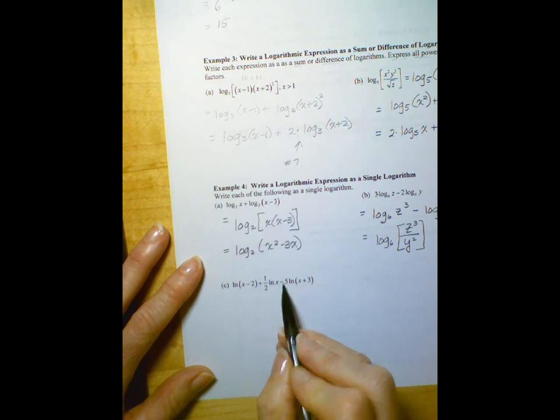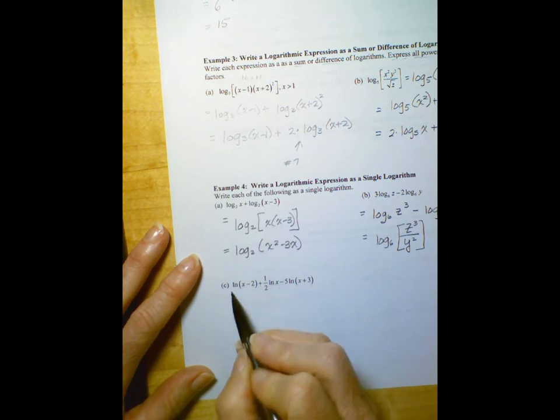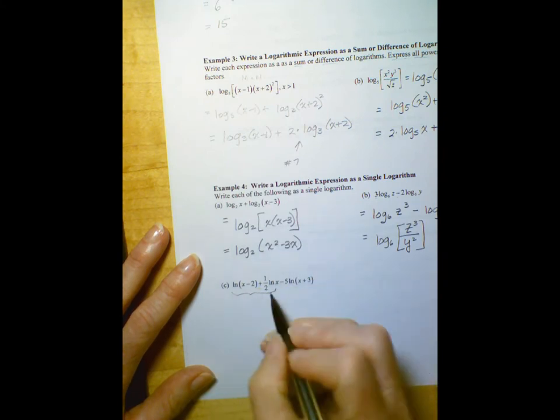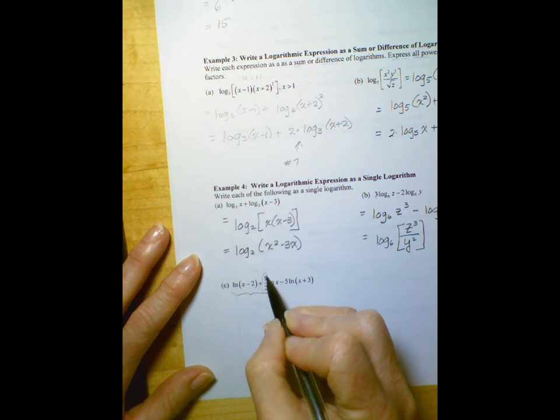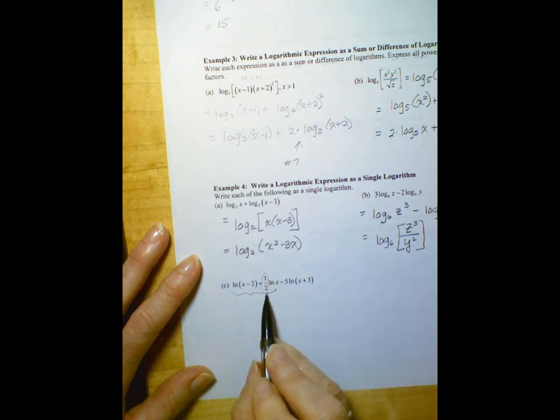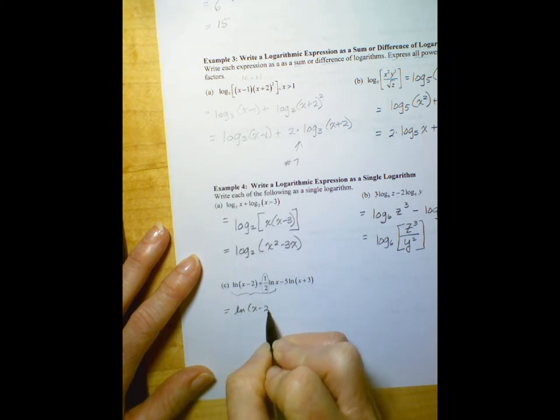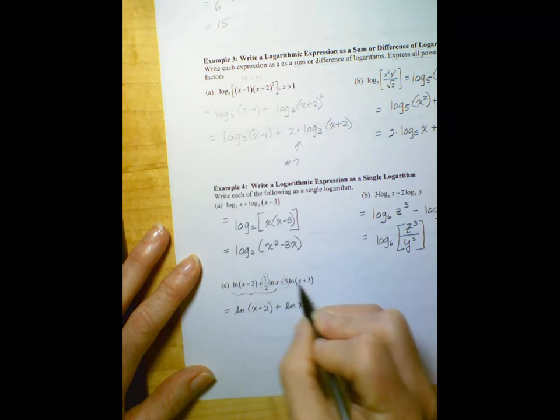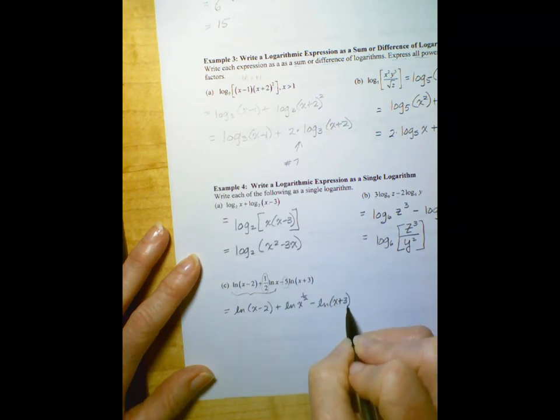And in our final one, we have addition and subtraction. So I'm going to do this first, write that as a product, and then I'll bring this one in and write as a quotient. But first, I have to make this a power. So I have the natural log of x minus 2 plus the natural log of x to the 1 half power minus, and I'll go ahead and do the same here with this 5, the natural log of x plus 3 to the fifth.